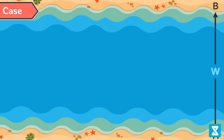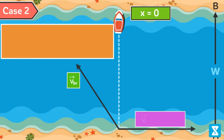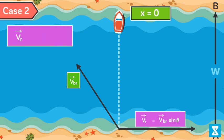Case 2: to cross the river by shortest path. This means that the drift is equal to 0. Therefore, VR minus VBR sin theta times W divided by VBR cos theta equal to 0, or VR is equal to VBR sin theta.